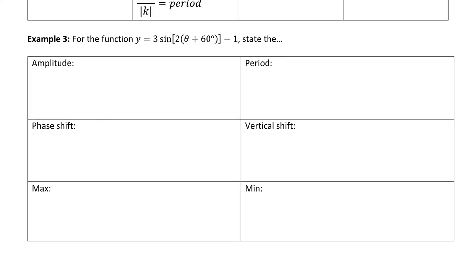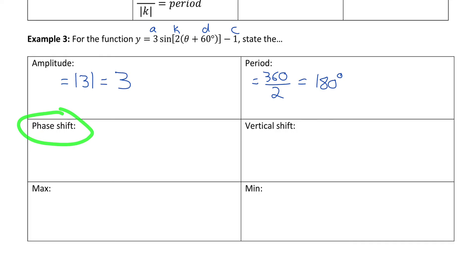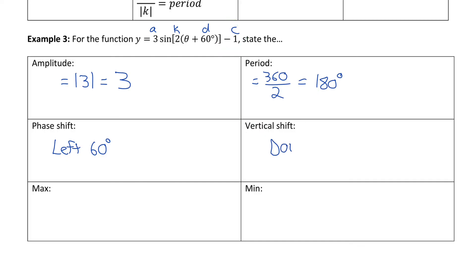Let's fill out the table for a transformed sine function. The amplitude is the absolute value of a, which is the absolute value of 3, equal to 3. The period is 360 divided by the absolute value of k, which is 360 over 2, equal to 180 degrees — the function is horizontally compressed by one half. The phase shift is caused by the d value. Remember, d is always the opposite sign of what you see in the equation. If the equation shows plus 60, then d is negative 60, meaning the function shifts left 60 degrees. The vertical shift is caused by c, which is negative 1, so the function moves down one unit.